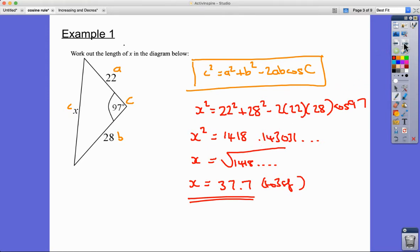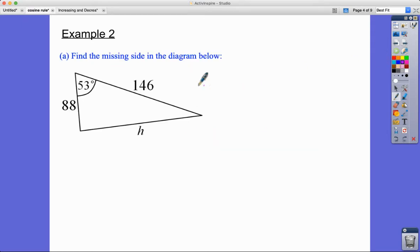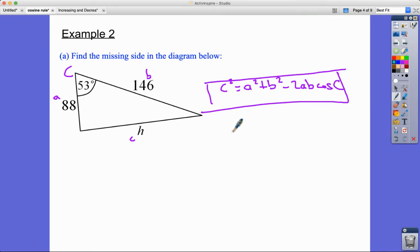Example two. This next one, a very similar example. I'm just going to label up the sides again, so I've got c and c, a and b. c² = a² + b² - 2ab cos C. The more that you actually write that down, the better it is, the quicker you are with it to remember it. My personal experience is that students don't find it too difficult to remember actually. So h² = 88² + 146² - 2 × 88 × 146 × cos 53.